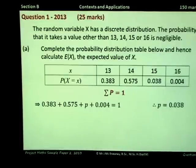Next, we want to calculate the expected value of X. To calculate the expected value of X, this is calculated by summing the product of each of the random variables X by its corresponding probability. So it's 13 by 0.383, plus 14 by 0.575, plus 15 by 0.038, plus 16 by 0.004. Mathematically, we can write this as the expected value of X is sigma X times p.